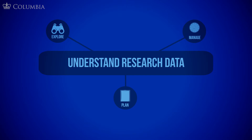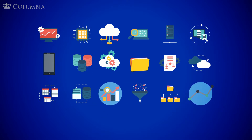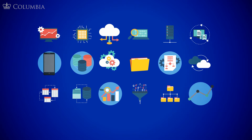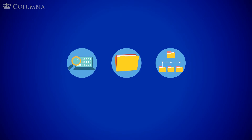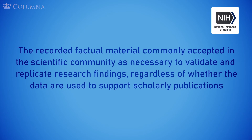Understand research data. Data is a big, complicated concept. From charts and graphs, to servers, mobile phone networks, and dense informational reports, the term data can mean many things. This video will focus on a particular kind of data: research data. The National Institute of Health, or NIH, defines scientific data — more broadly called research data — as the recorded factual material commonly accepted in the scientific community as necessary to validate and replicate research findings, regardless of whether the data are used to support scholarly publications.